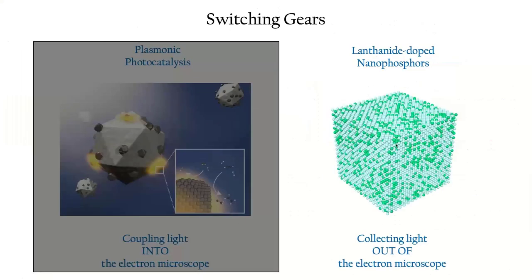With that, I'm going to switch gears. We're no longer going to be talking about coupling light into the microscope. Rather, we're going to be talking about projects I've been spearheading over the last year based on lanthanide-doped nanophosphors and collecting cathodoluminescence out of the electron microscope, again using the same type of tools as before.